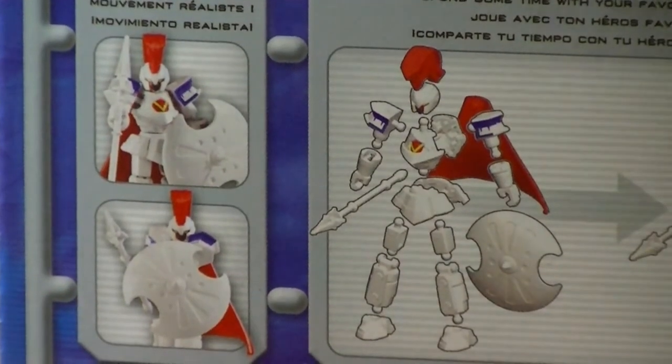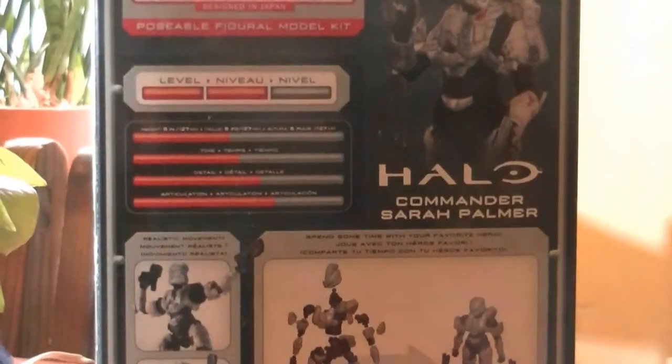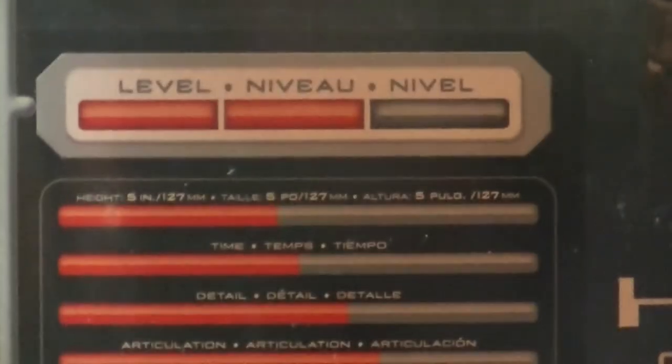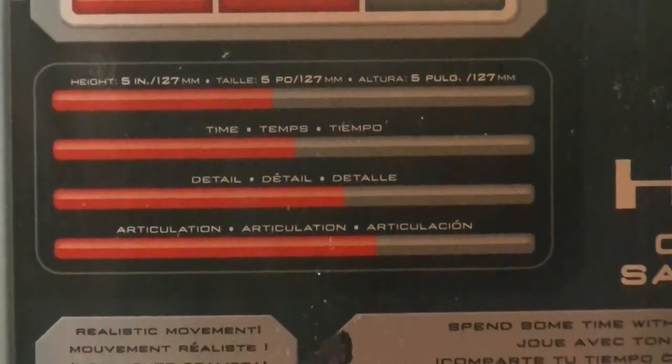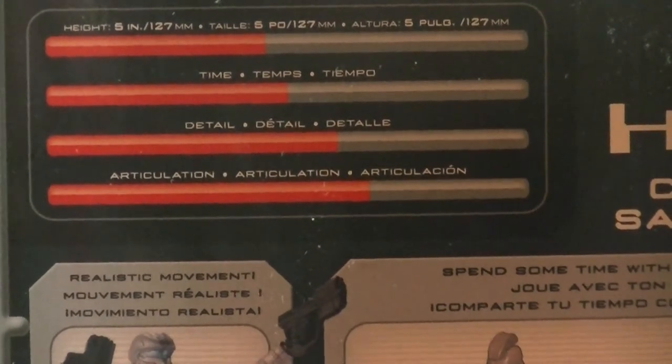Just for comparison, let's take a look at the back of the big sprue kit. As you can see, this is a level 2 kit. With all those extra parts, it kind of has to be. It's going to be 5 inches when built, will take more time, has more detail, and way more articulation. This is going to be fun.